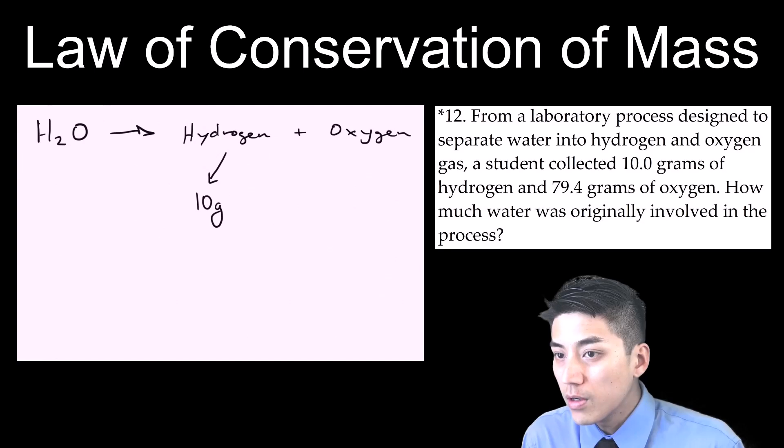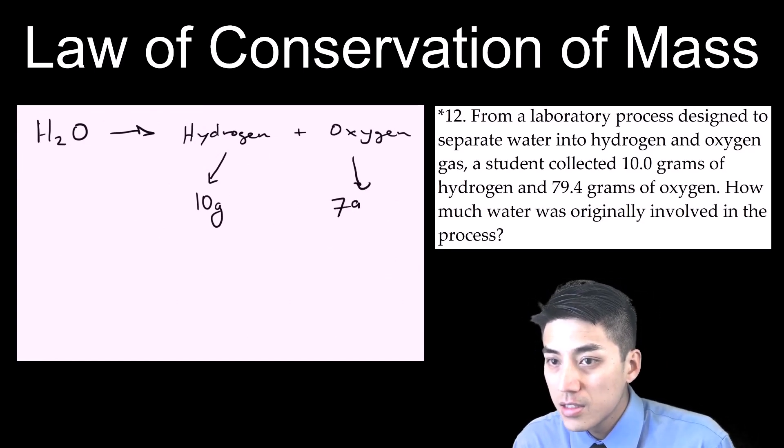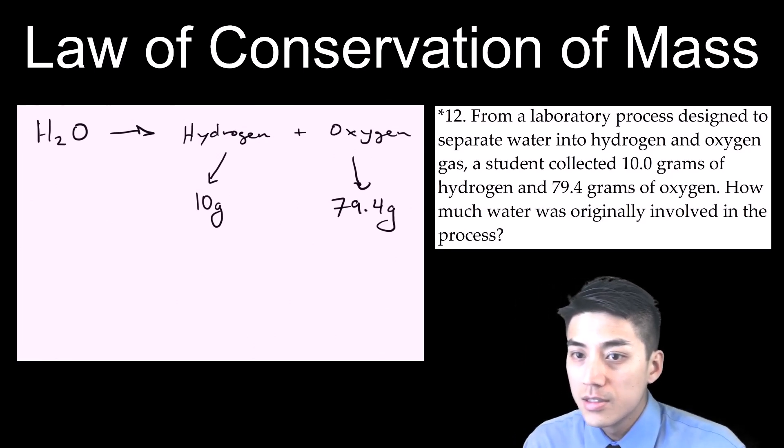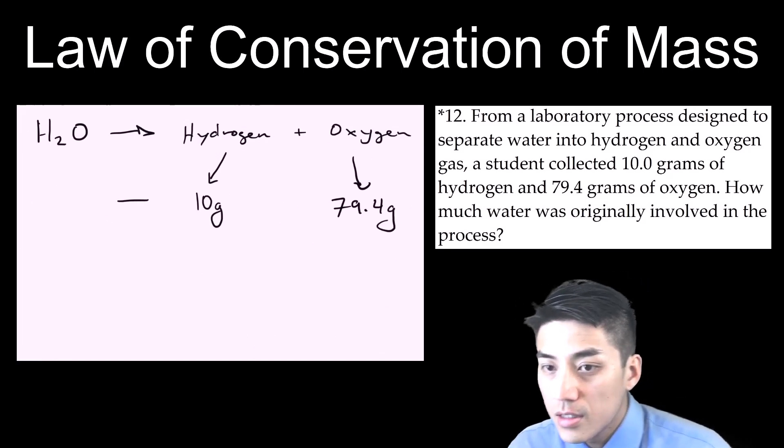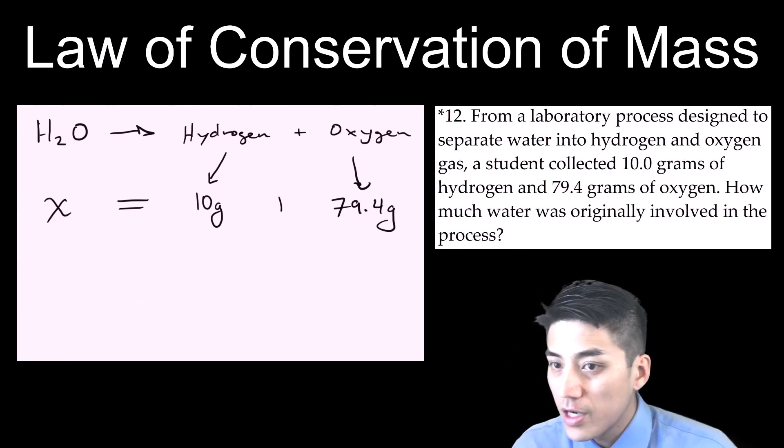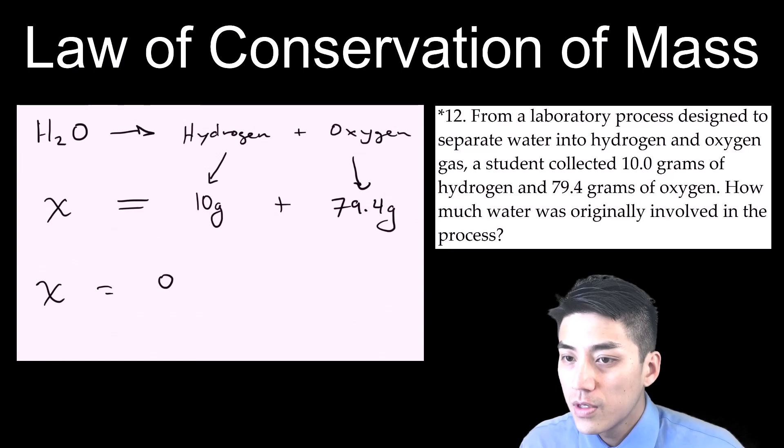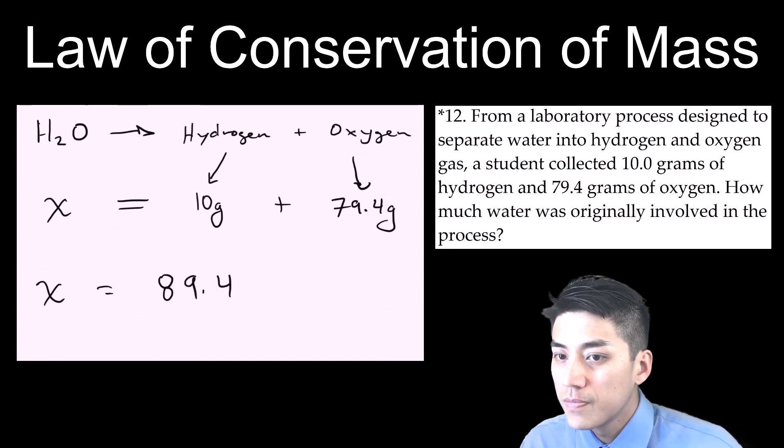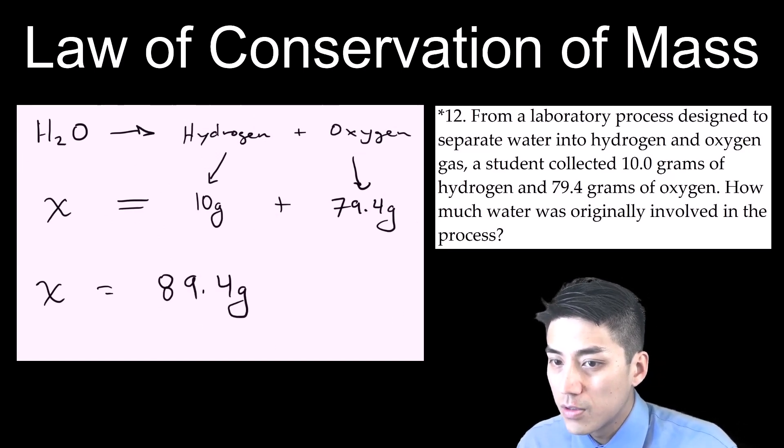Let's check out problem number 12. This is an example of the law of conservation of mass. So you have water breaking down chemically into hydrogen and oxygen. And they tell you you retrieve 10 grams of hydrogen and 79.4 grams of oxygen. They want to know how much water you started with. Well, it's just simple algebra. Just add the masses of your products together and you get 89.4 grams of water.